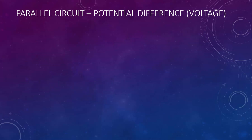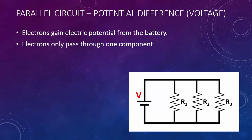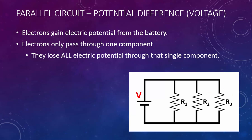Now let's take a look at parallel circuits, starting with potential difference or voltage. Once again, electrons gain electric potential from the battery. But this time, electrons are only passing through one component, so they have to lose all their electric potential through that single component.